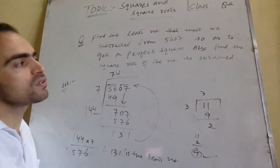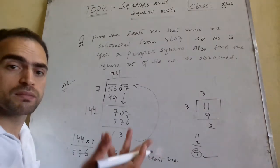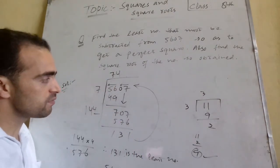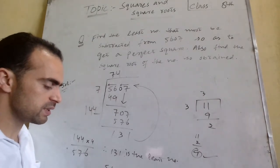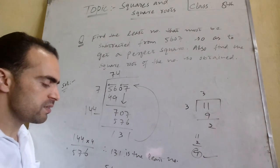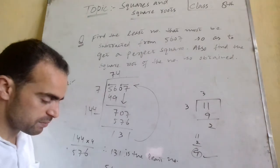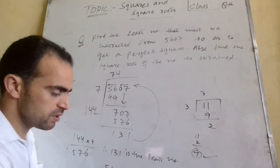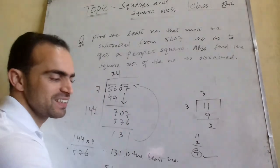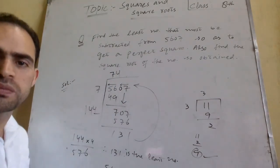The question also asks: find the square root of the number so obtained. After subtracting 131 from the given number, we get a perfect square. The square root of that number is simply the quotient already obtained from our long division — there is no need to recalculate it. The square root of 54769 − 131 = 54638... is the quotient from the division. I hope you got it.